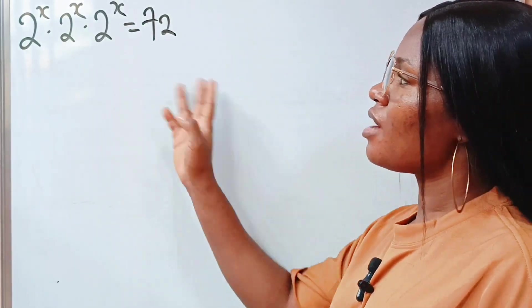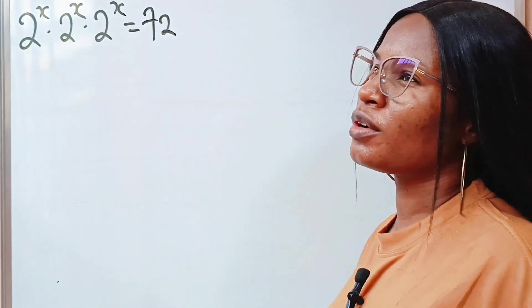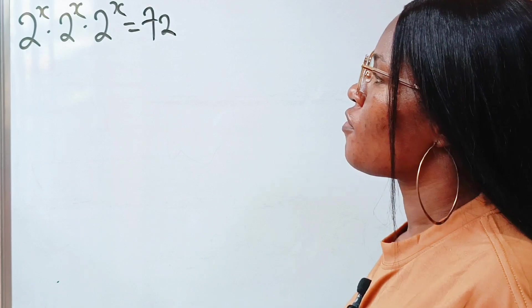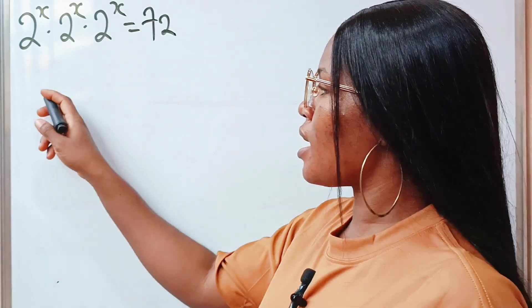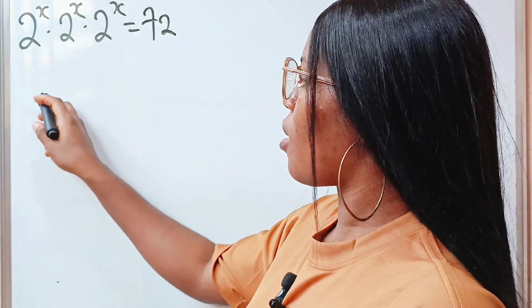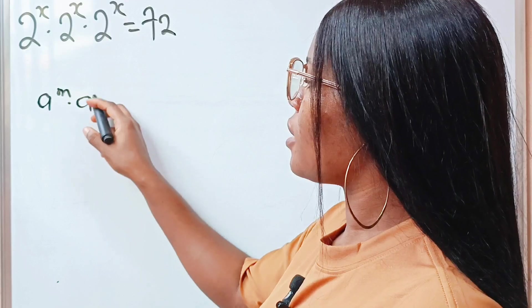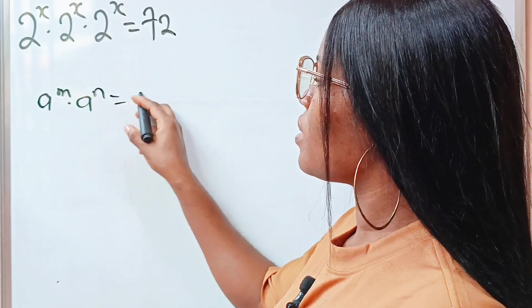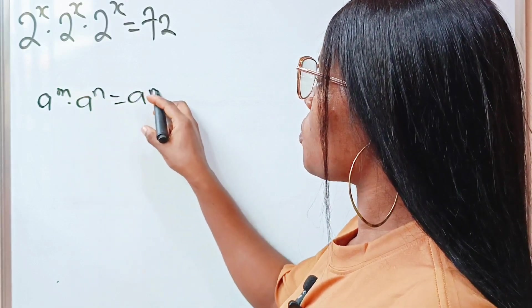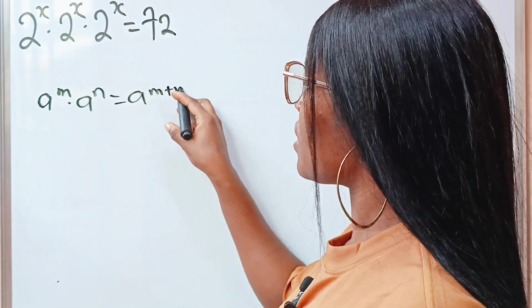Hi friends, let's solve for the value of x. First, remember that a to the power of m multiplied by a to the power of n is equal to a to the power of m plus n.